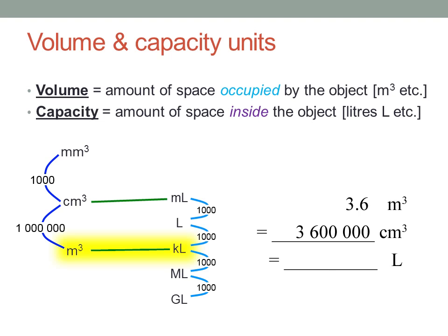And litres? You can go either from the cubic metres to kilolitres, or the cubic centimetres to millilitres. In general, it's better to go from information given to you, rather than something you've calculated yourself. So let's go from cubic metres to kilolitres. It's three-point-six kilolitres, which is three thousand six hundred litres.